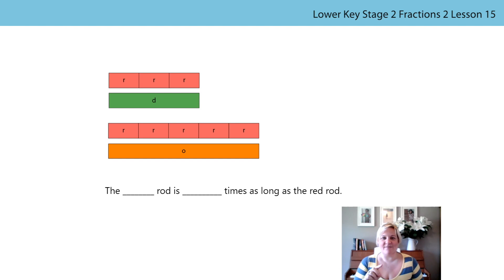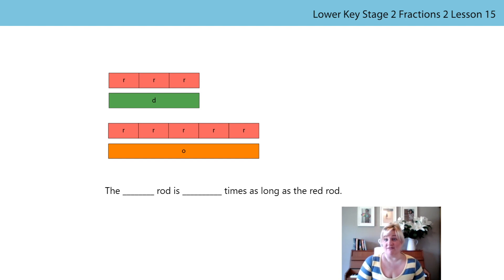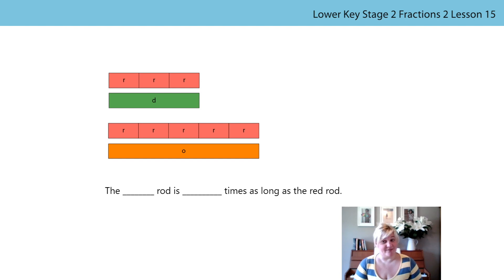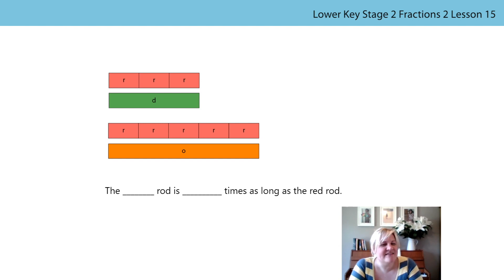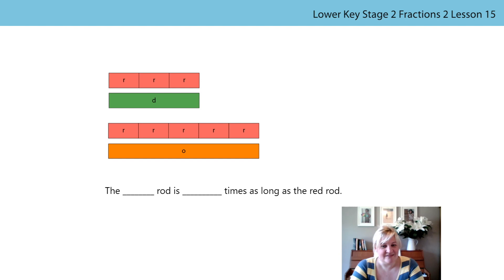Let's look at these two images together. What's the same and what's different? One thing that's the same is that we have parts and wholes in both images. But one whole is made from three equal sized parts and the other is made from five equal sized parts. The red rod is the same size in each image, but it is a different unit fraction in each image, and that means the two wholes are different sizes as well. Have a go at filling in the stem sentence for both sets of pictures.